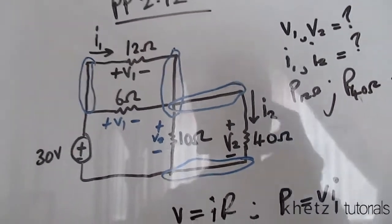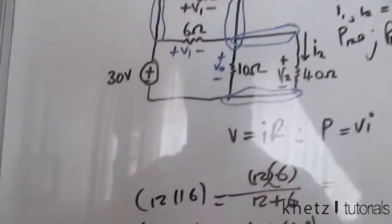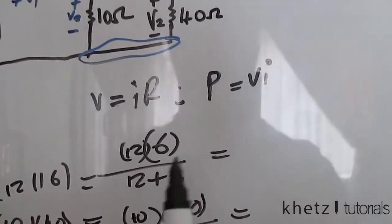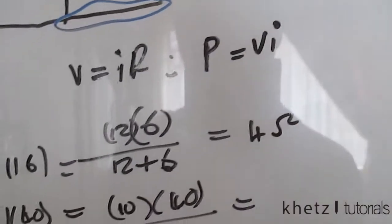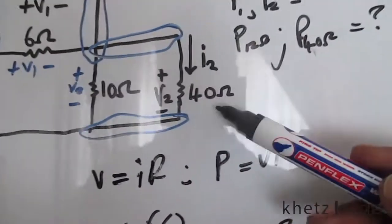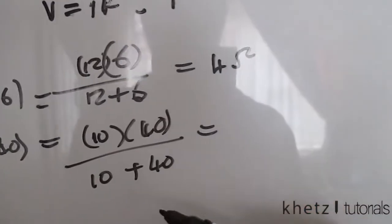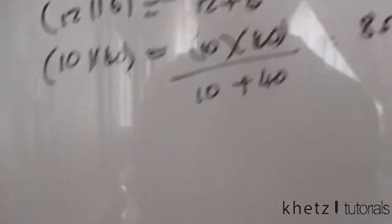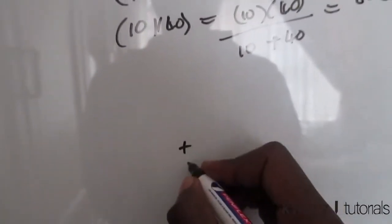We have 12 ohms in parallel with 6 ohms: 12 times 6 divided by 12 plus 6 equals 4 ohms. And we have 10 ohms in parallel with 40 ohms: 400 divided by 50 equals 8 ohms.